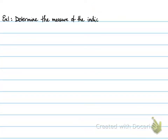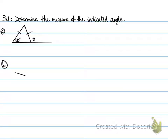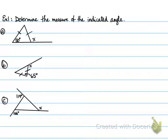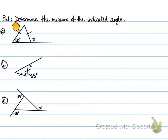Example 1: Determine the measure of the indicated angle x. For part A, we have an isosceles triangle — identified by two equal sides. Because of ITT, the angle opposite the second equal side must also equal 50 degrees. We need to state the reason for every value we find.